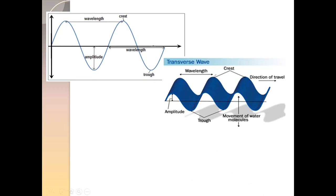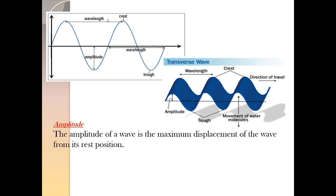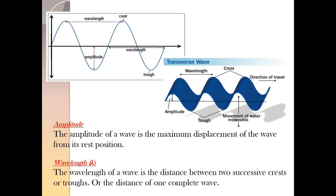As you can see this transverse wave: the highest points are known as crests, the lowest points are known as troughs. The distance between two successive crests or two successive troughs is known as wavelength. The total height of the wave is known as amplitude. Amplitude of a wave is the maximum displacement of a wave from its rest position or mean position, and the wavelength refers to the distance between two successive crests or two successive troughs, or the length of one complete wave.